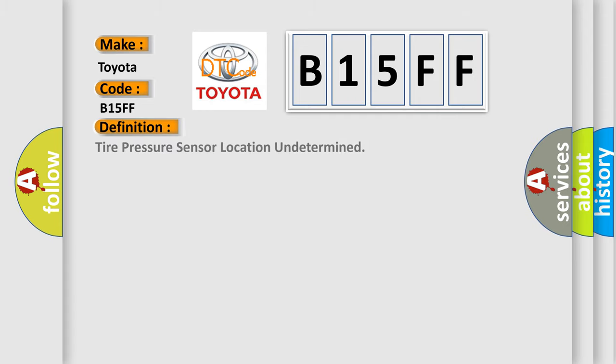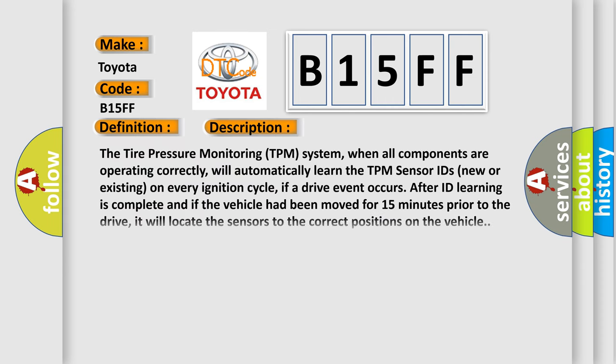The basic definition is: Tire pressure sensor location undetermined. The tire pressure monitoring (TPM) system, when all components are operating correctly, will automatically learn the TPM sensor IDs — new or existing — on every ignition cycle. If a drive event occurs after ID learning is complete and if the vehicle had been moved for 15 minutes prior to the drive, it will locate the sensors to the correct positions on the vehicle.